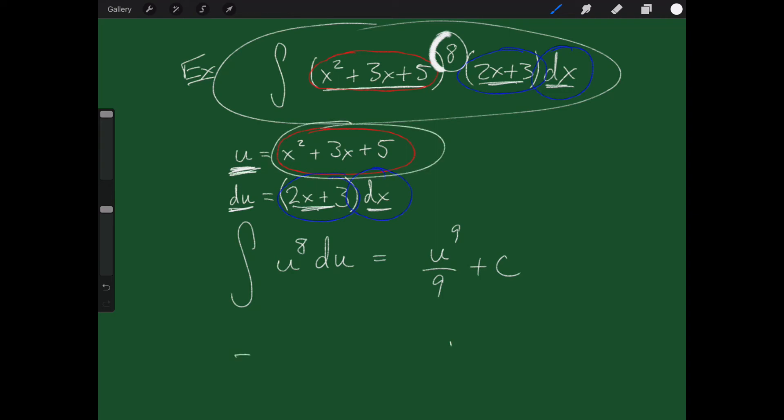So I just rewrite in terms of u and I get that it's (x² + 3x + 5)⁹/9 + C. And I have my antiderivative.